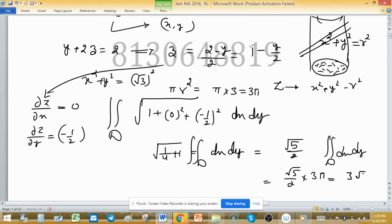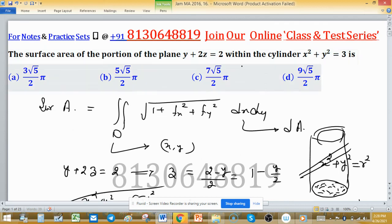Now which option is giving this value? 3 root 5 upon 2 pi. So option A is correct: 3 root 5 upon 2 pi.